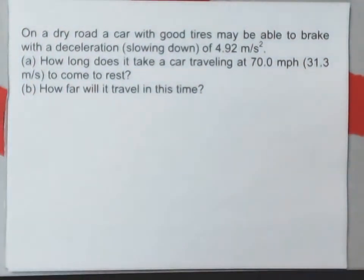On a dry road, a car with good tires may be able to brake with a deceleration, a slowing down of 4.92 meters per second squared. That's actually pretty good braking. That'd be half a g of acceleration.